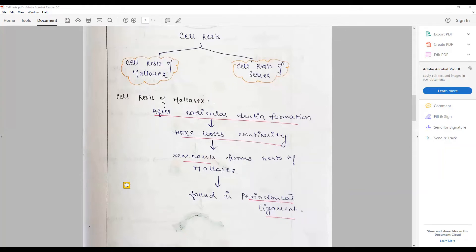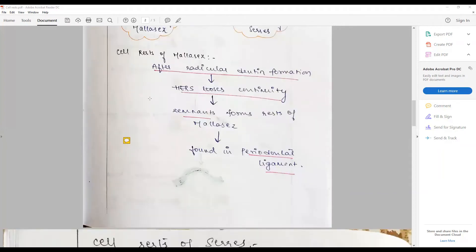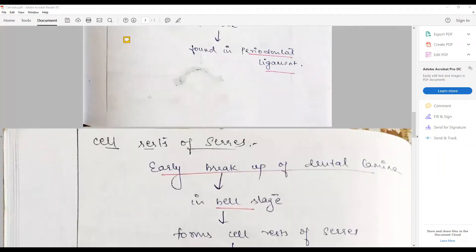Cell rest of Serres - during the advanced bell stage, there is a dental lamina breakdown. In the bell stage, the dental lamina, which is an extension from the oral mucosa, gets detached.